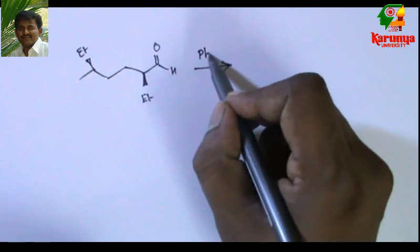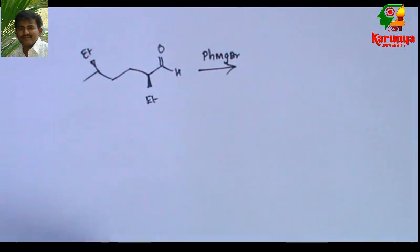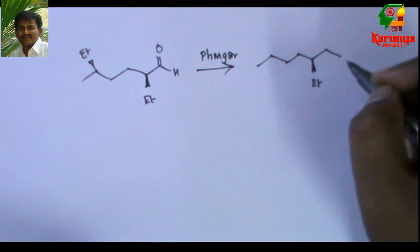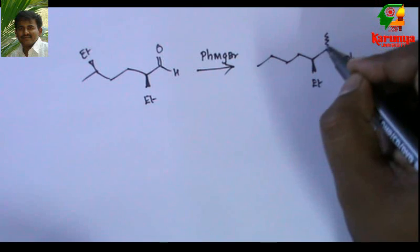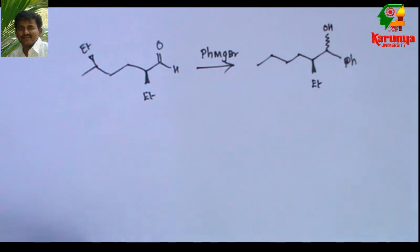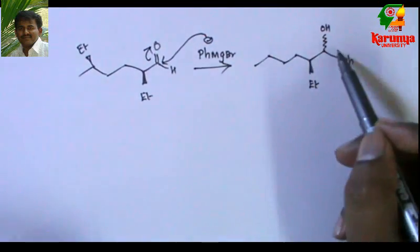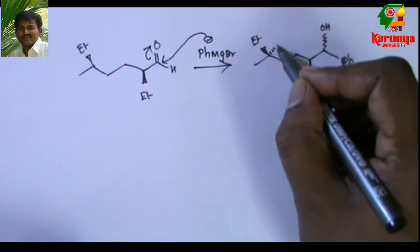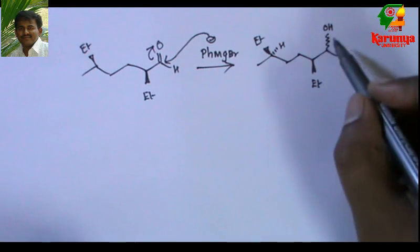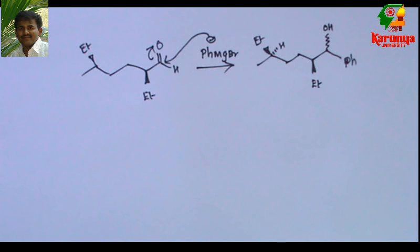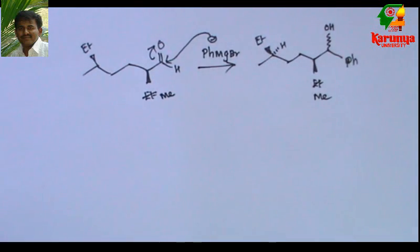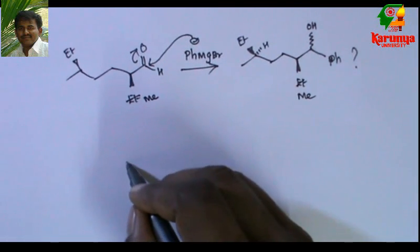This aldehyde is treated with phenylmagnesium bromide and what we get is this alcohol. Phenyl minus attacks here and what we get is secondary alcohol. What will be the stereochemistry? Whether this ethyl and hydroxyl will be cis or trans? In the earlier case, the hydroxyl and methyl, they were trans. In order to solve this, I go for the Cram's rule again.